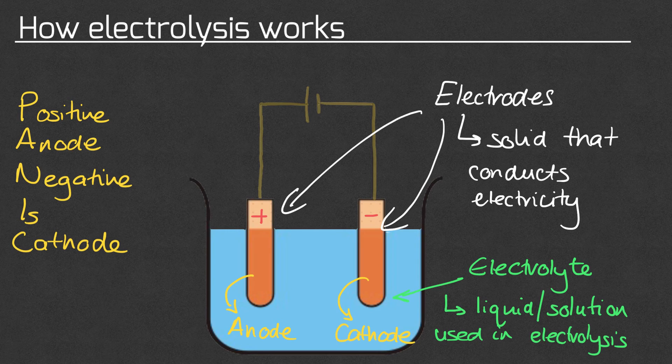The electrolyte is the liquid or solution that we use in electrolysis — so it's either the molten ionic compound or the ionic compound dissolved in water.